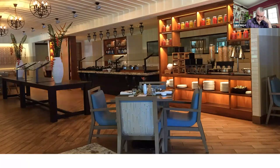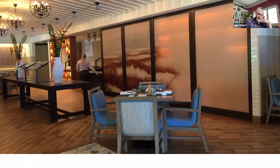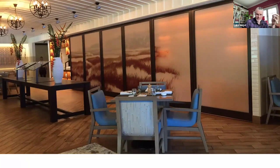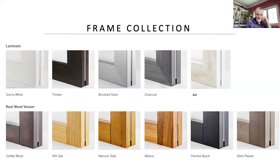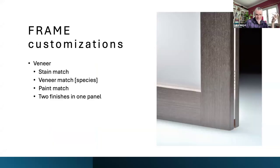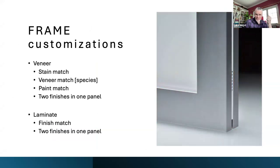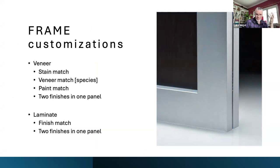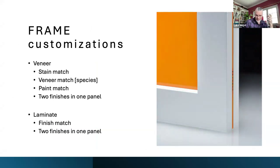Here's a rather custom example — five-foot-wide, eight-foot-six-tall brush bronze painted frames with a charcoal drawing designed by the interior design firm, then augmented and encapsulated in polycarbonate over eight panels to create an environmental graphic. This is a poster child example of doing customization with RADOR. Here's a quick snapshot of our standard frame collection — laminates on the top row and real wood veneers on the bottom row. Customizations include stain match, veneer match, paint match, two different finishes on one single panel, and laminate finish matching for larger projects.